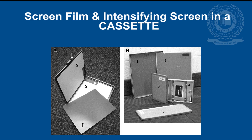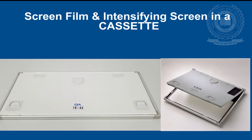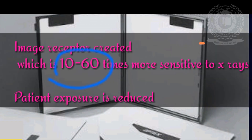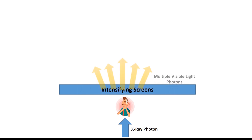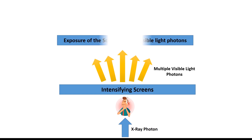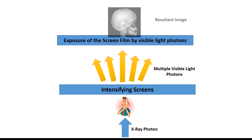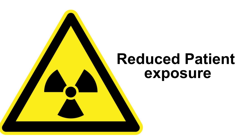The image receptor system used in extraoral radiography is composed of screen film and intensifying screens. This creates an image receptor system which is 10 to 60 times more sensitive to x-rays than the film alone, because one x-ray photon that falls on the screen is converted into 4000 visible light photons which then exposes the film. Thus, this image receptor system greatly reduces the patient exposure.